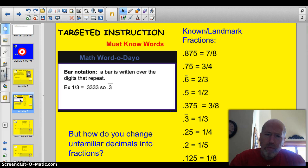Let's first take a look at some must-know words. First of all, we've got bar notation. I want you to take a look at this fraction here, 1 third. You know how when you hit that in a calculator, you get 1 divided by 3 equals 0.33333? You can put a bar over the top of that first 3 just to let people know that that repeats.